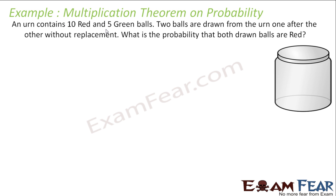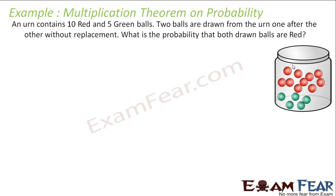I have an urn that contains 10 red and 5 green balls. Two balls are drawn from this urn one after another without replacement. What is the probability that both the balls drawn are red?